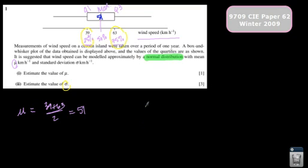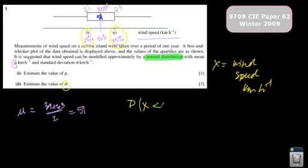is I'm going to write this as a probability. I am going to say the probability that x, and I'm going to let x be the wind speed, in kilometers per hour, is less than 63, is equal to 0.75. This is kind of the leap they're expecting me to make, because you know the probability here.